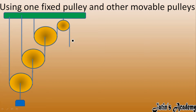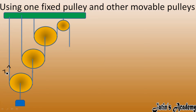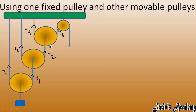Before calculating the mechanical advantage, let's identify the tension in each string. Remember: one continuous string has one constant tension throughout. The first string has tension T1, the second string has tension T2, and the third string has tension T3. This third string extends up to the fixed pulley, so T3 also appears there, and the effort is applied at that point. The load is what we need to raise.